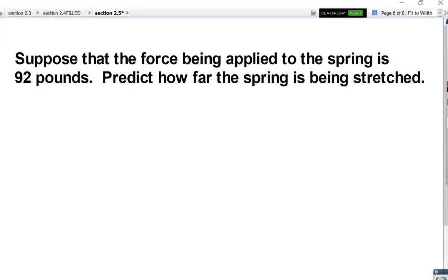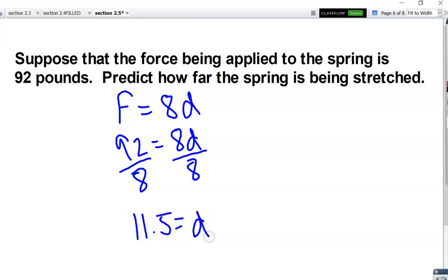So now let's say that the force being applied to the spring is 92 pounds. Our job is to predict how far the spring is being stretched. So again, I'm going to write it on this slide too. F equals 8 times D. And for us, this time we're applying 92 pounds of force. So this time we get a distance of 11 and a half inches.